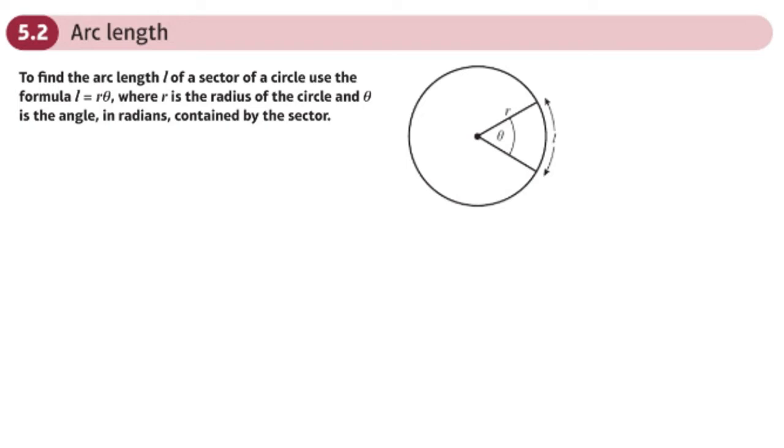Hopefully you'll remember from the first section on radians that if we've got a circle of radius 1, then this angle is the same as the arc length here when we're measuring the angle in radians.